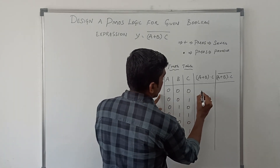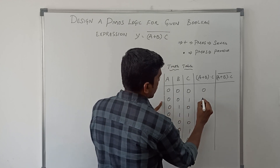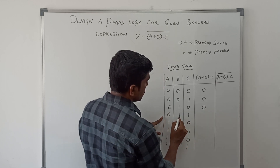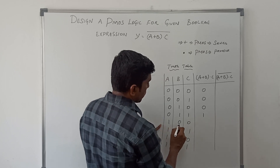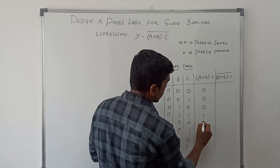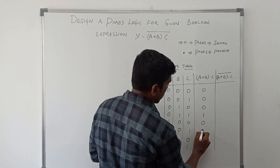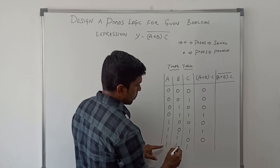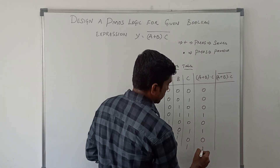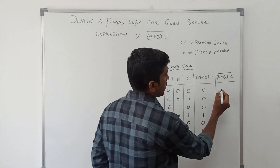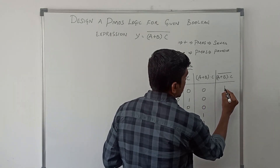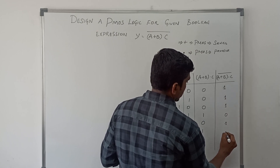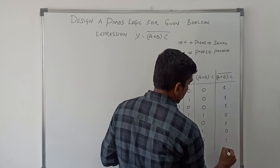Starting with zero plus zero dot zero gives zero. The equation evaluates to 1, 1, 1, 1, 1, 1, 1 for the remaining combinations. Then taking the one's complement, you get the final result: 1, 1, 1, 0, 1, 0, 1, 0.